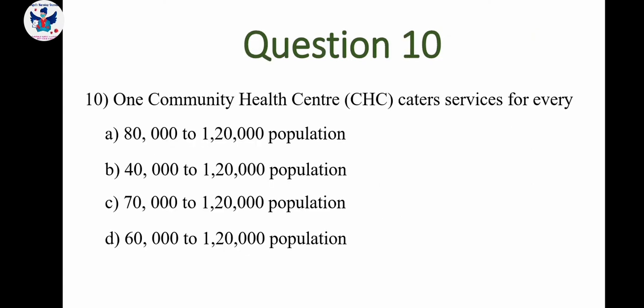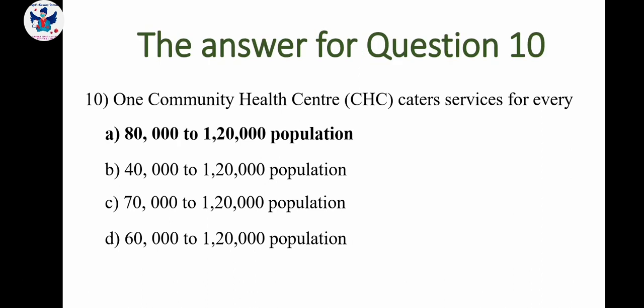Next question: One community health center caters service for every — A: 80,000 to 1,20,000 population, B: 40,000 to 1,20,000 population, C: 70,000 to 1,20,000 population. The correct answer is 80,000 to 1,20,000 population. To summarize: primary health center covers 30,000 population, community health center covers 80,000 to 1,20,000 population, and sub-center covers 5,000 population.